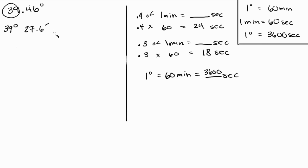But we want to get seconds. So if the 0.6 represents 0.6 of one minute, then that means that's 0.6 times 60, right? So 39 degrees, 27 minutes.